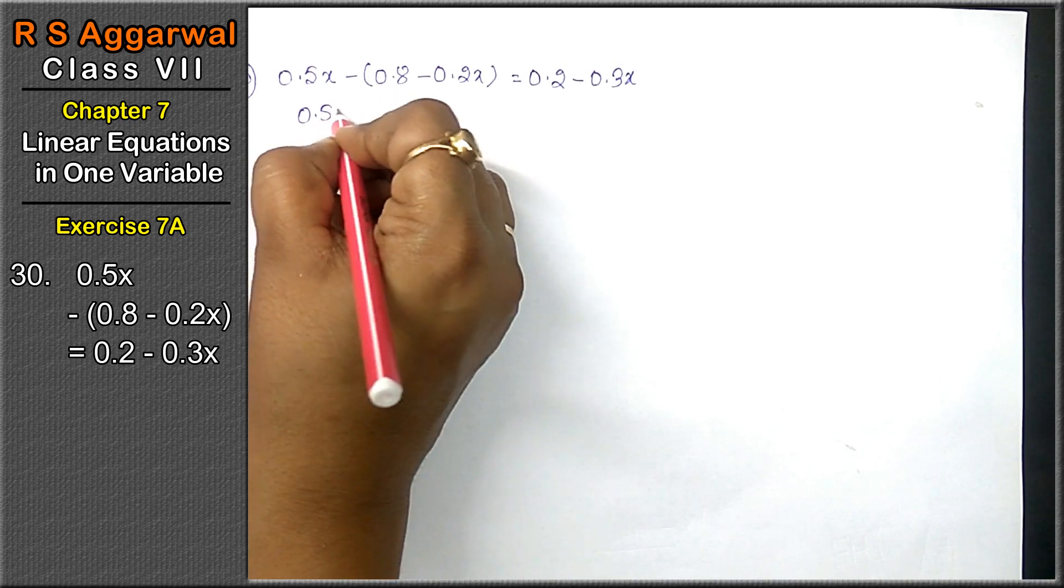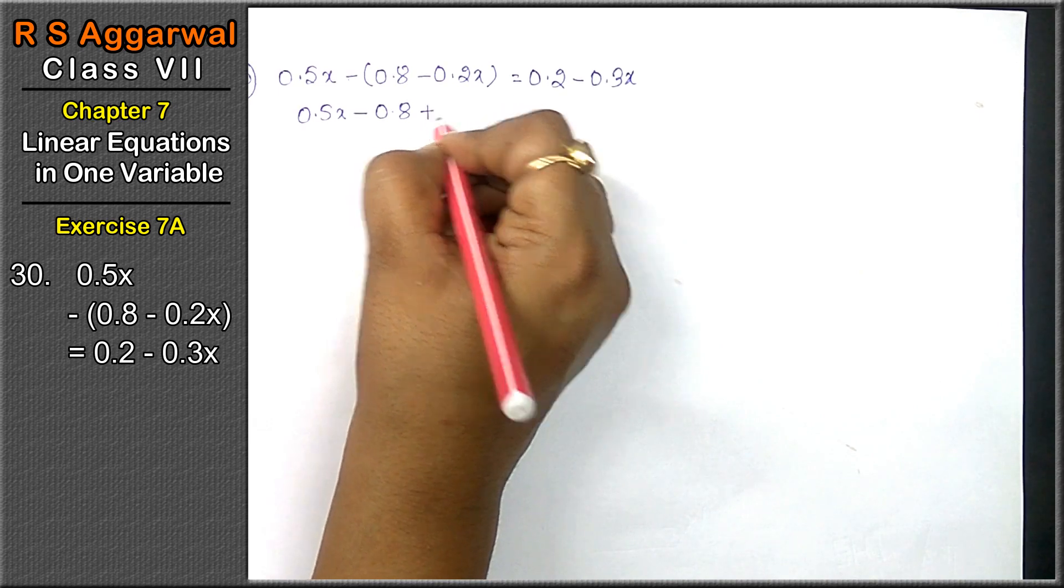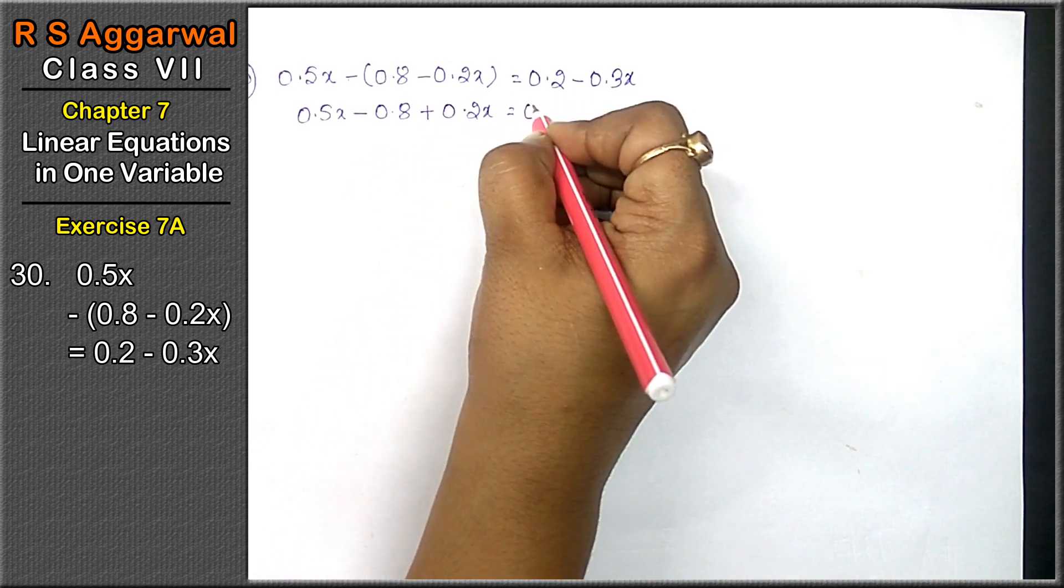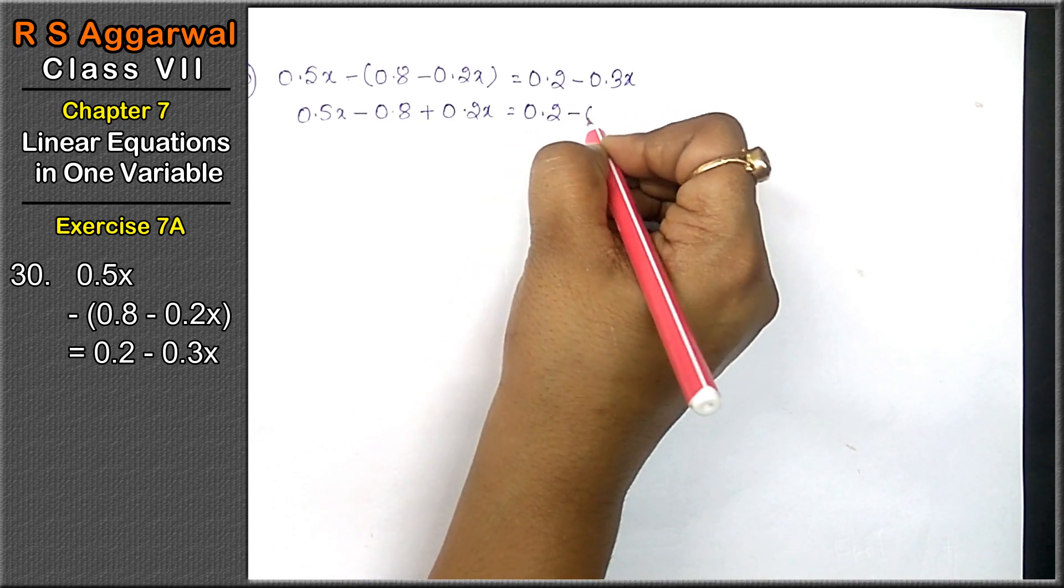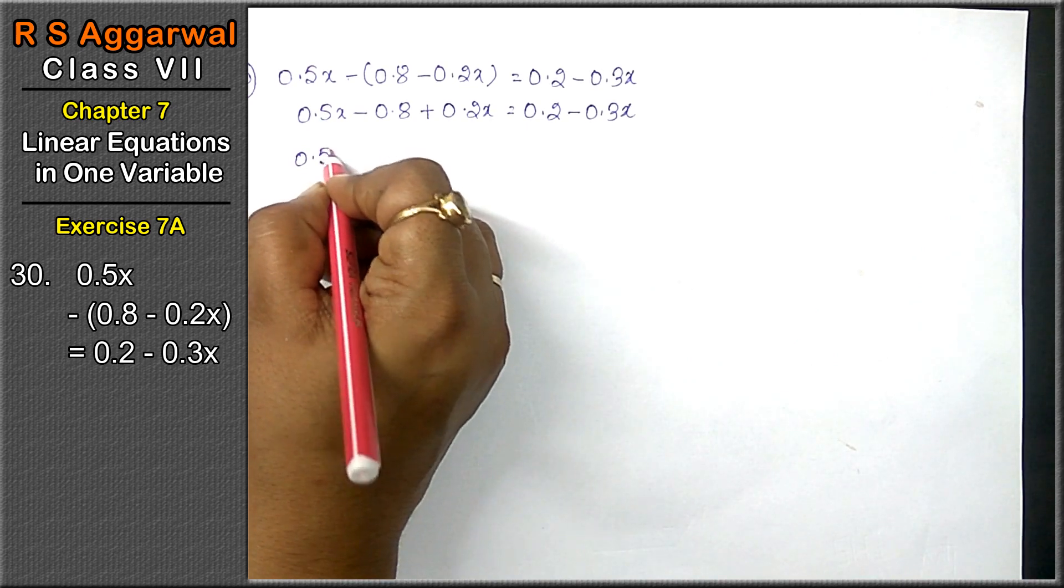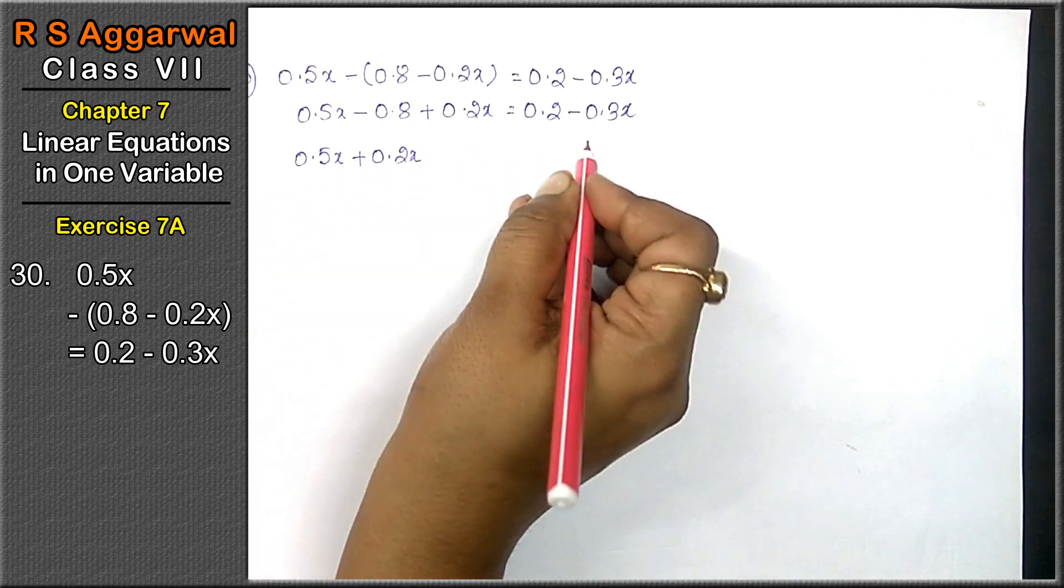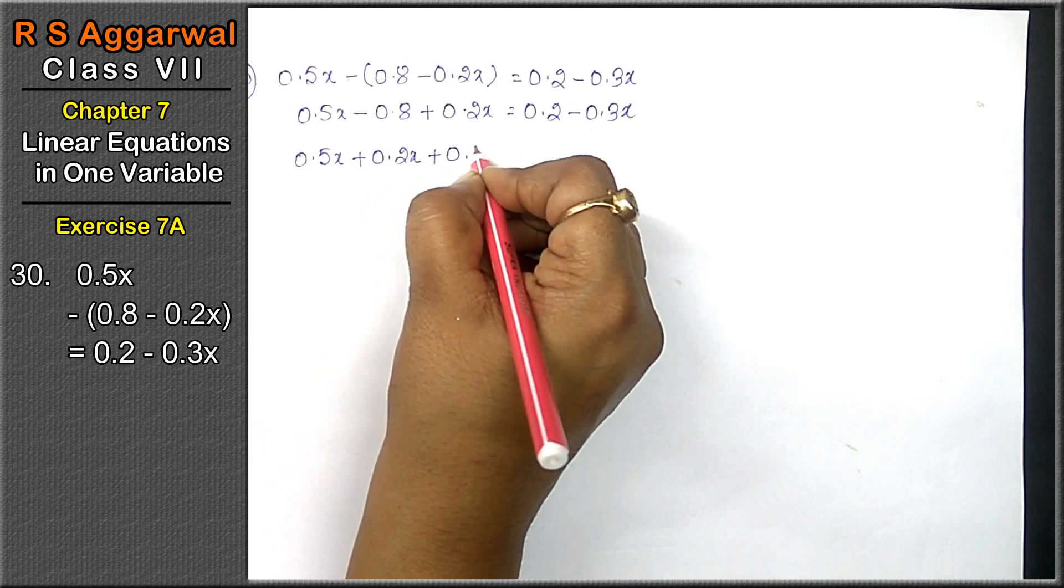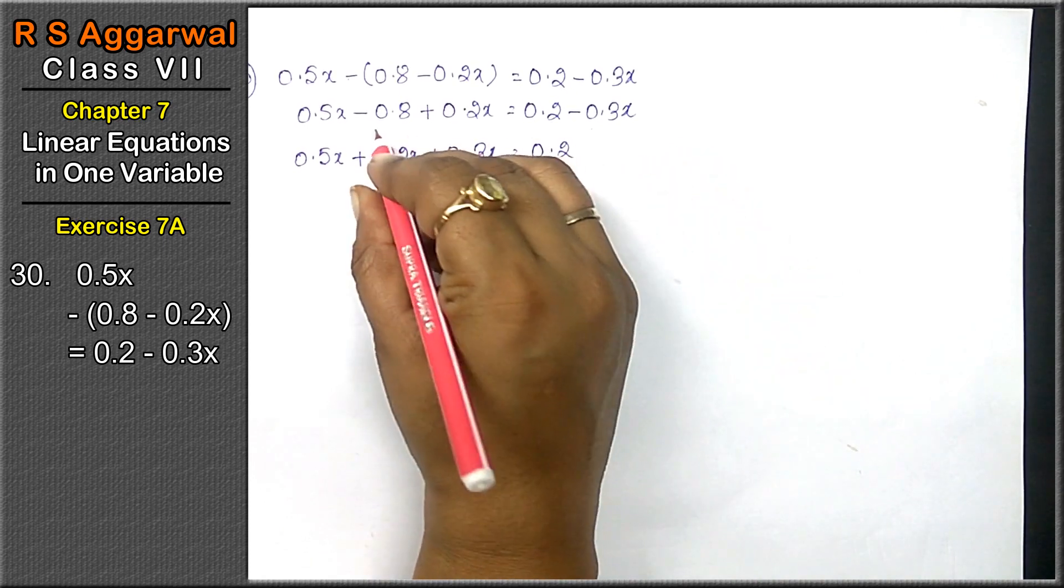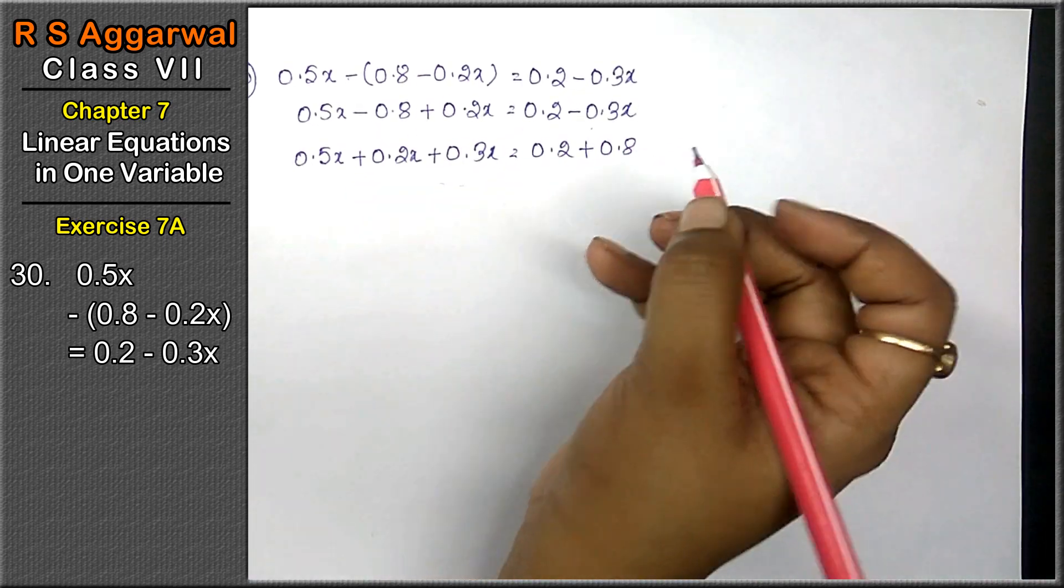0.5x - 0.8 minus minus plus 0.2x equals to 0.2 - 0.3x. Now x terms on this side: 0.5x + 0.2x - 0.3x equals to 0.2 plus 0.8.